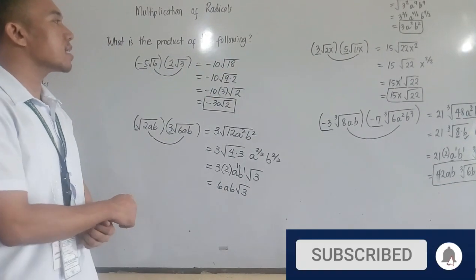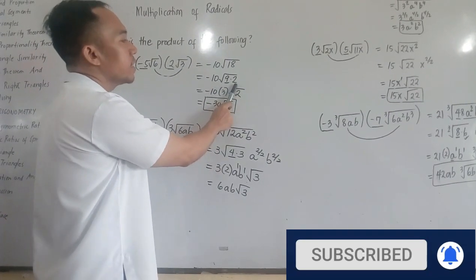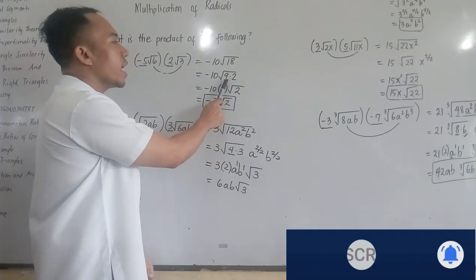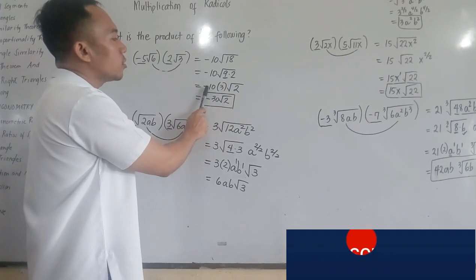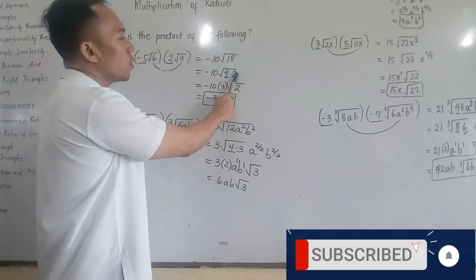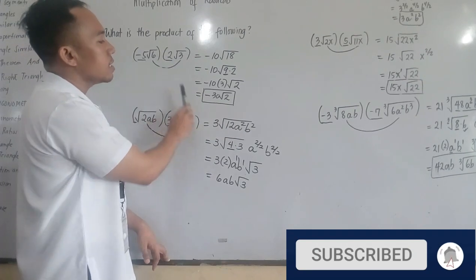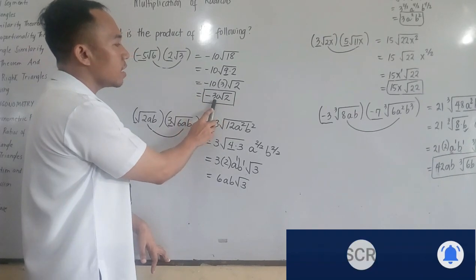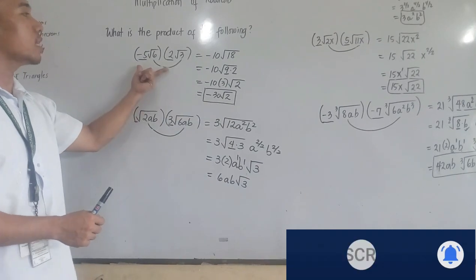Since 18 has a perfect square factor, we need to factor 18 as 9 times 2. And 9 is a perfect square, so it becomes 3. Then it will be multiplied to your coefficient outside, negative 10. Then copy square root of 2, which is the remaining radical. So your final product is negative 30 — which comes from negative 10 times 3 — then copy square root of 2.